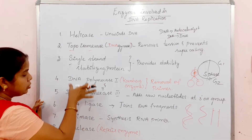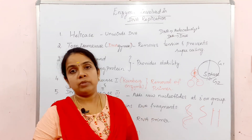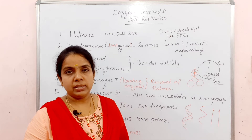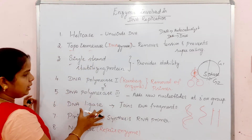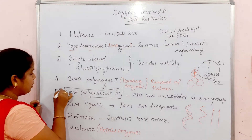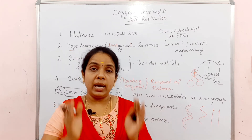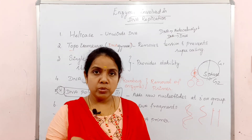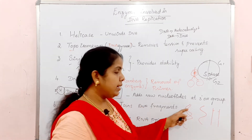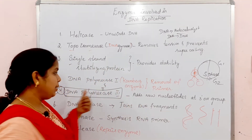The next enzyme is DNA Polymerase. There are three types in prokaryotes: DNA Polymerase 1, Polymerase 2, and Polymerase 3. In eukaryotes, there are five types: alpha, beta, epsilon, and others. DNA Polymerase 3 is very important because it synthesizes the new DNA strand using the parent DNA strand as a template.